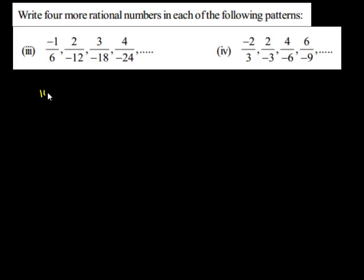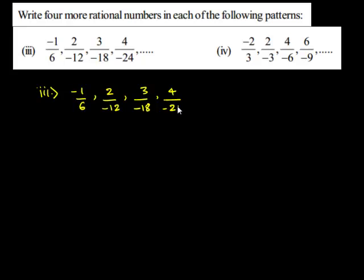The next question is: negative 1 upon 6, 2 upon negative 12, 3 upon negative 18, 4 upon negative 24, and so on. The first term, negative 1 upon 6, can also be written as 1 upon negative 6.